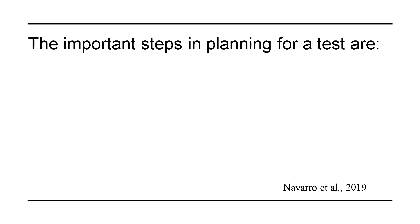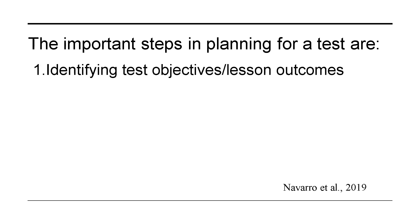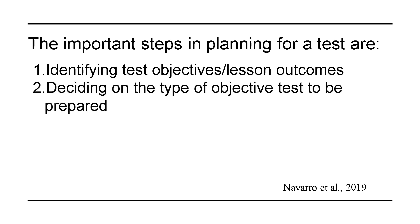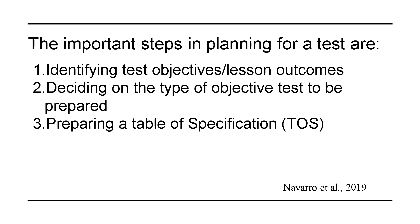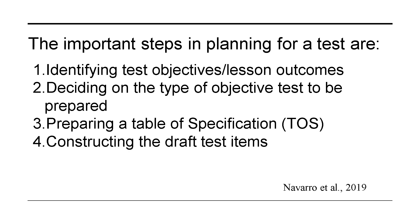Here are the important steps in planning for a test: 1. Identifying test objectives and/or lesson outcomes. 2. Deciding on the type of objective test to be prepared. 3. Preparing a table of specifications (TOS). 4. Constructing the draft test items, tryout, and validation. These five steps are important in planning for a test and I will be discussing them one by one in the next slides.